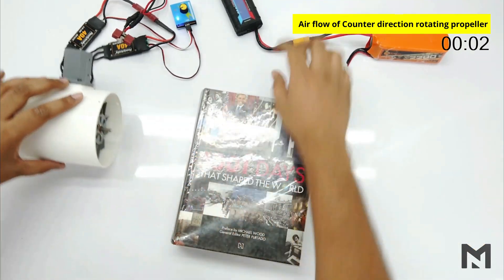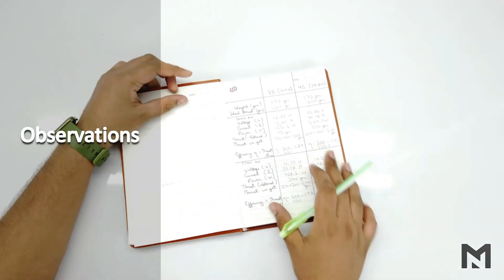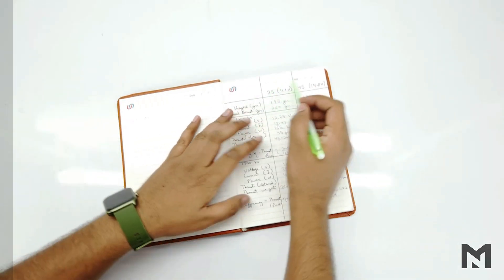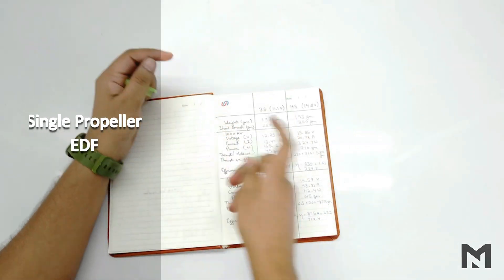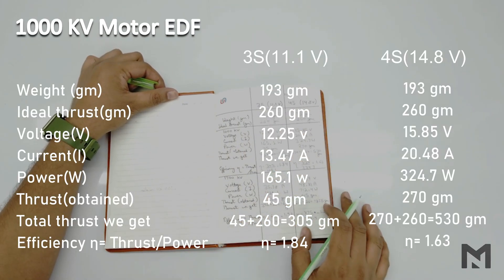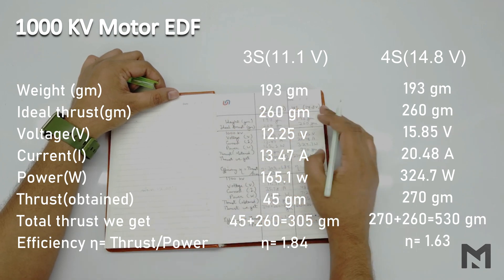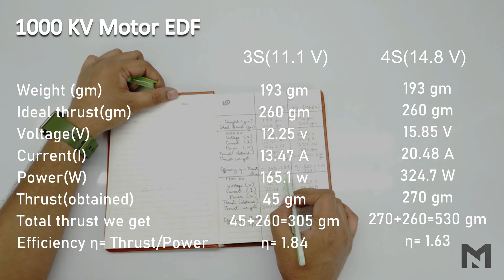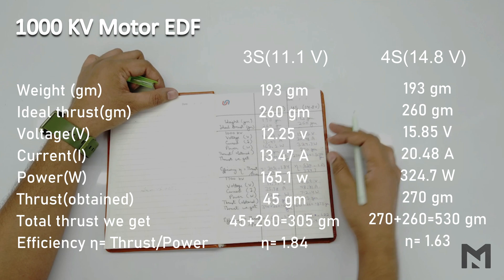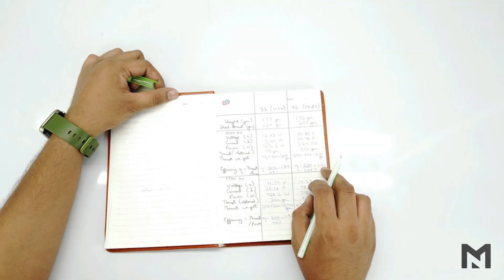Now let me show you the observations. So when we have connected it to a single propeller, the details were as given below. The 1000 KV EDF was less efficient. It gave 1.84 efficiency at 3S and 1.63 at 4S battery. And the thrust was 305 grams at 3S and 530 grams at 4S battery.